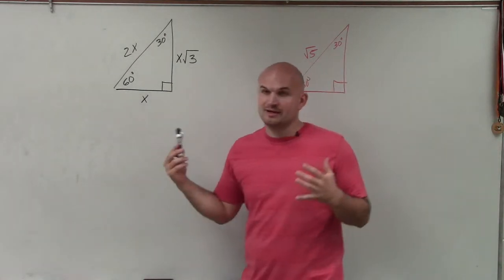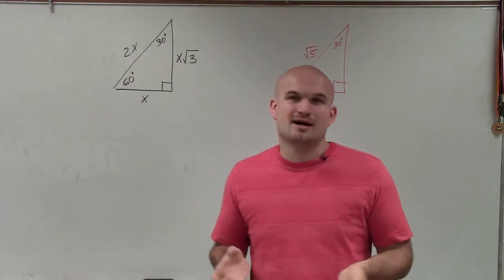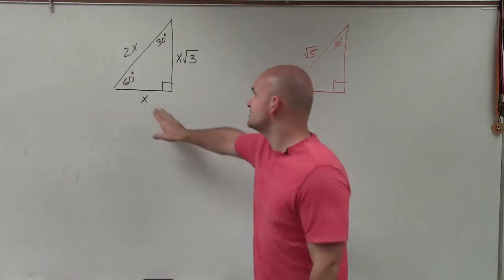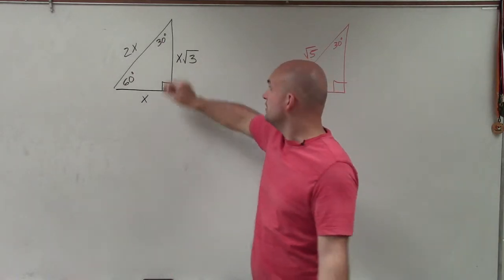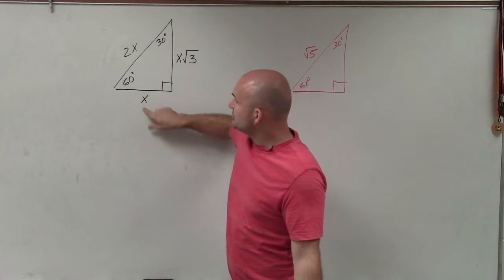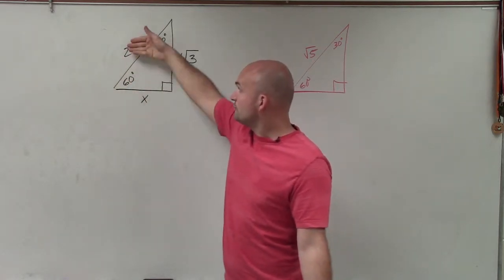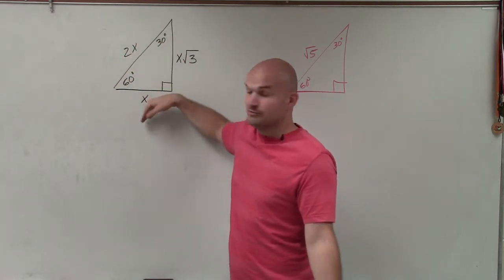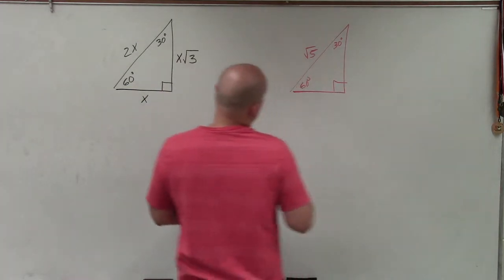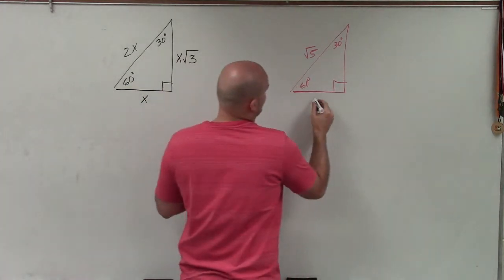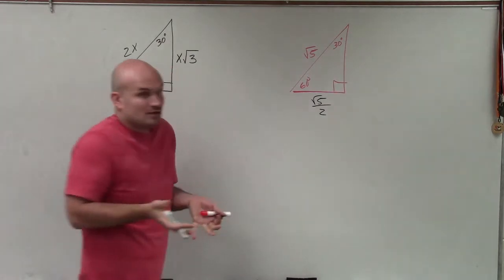When doing this, I always like to revert to my short leg because it's not multiplied by any term. So to go from my short leg to my hypotenuse, I multiply by 2. So to go from my hypotenuse to my short leg, I divide by 2. I'm simply going to take the square root of 5 and divide it by 2 — and that's my short leg.